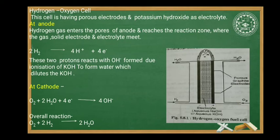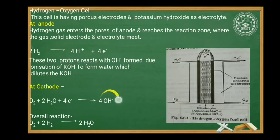Oxygen gas enters the pores at the cathode and reaches the reaction zone. The cathode reaction involves the gain of electrons — oxygen gains 4 electrons and forms 4 OH⁻ ions, replenishing the electrolyte. Combining the two electrode reactions gives the overall reaction: O₂ + 2H₂ → 2H₂O.